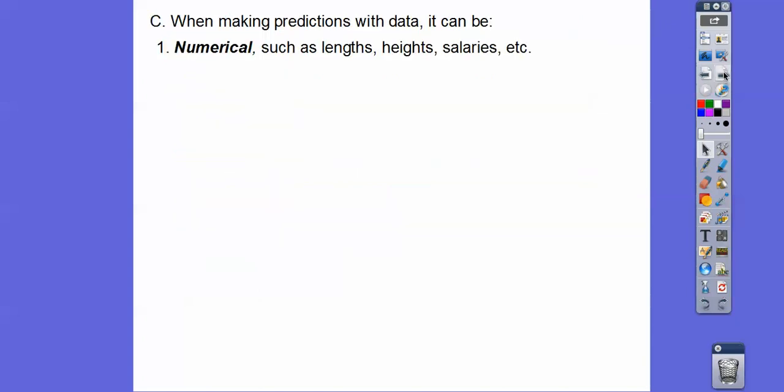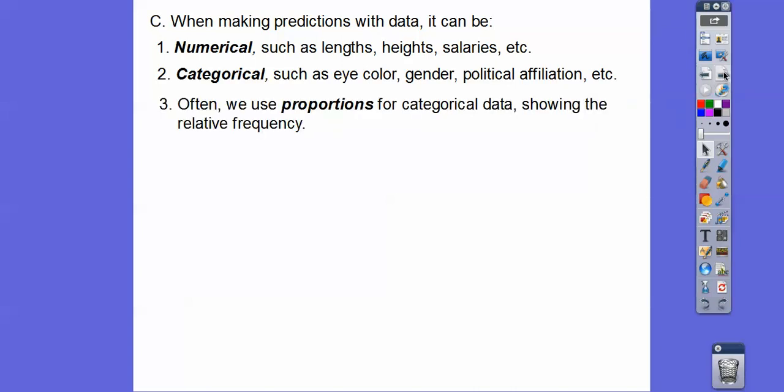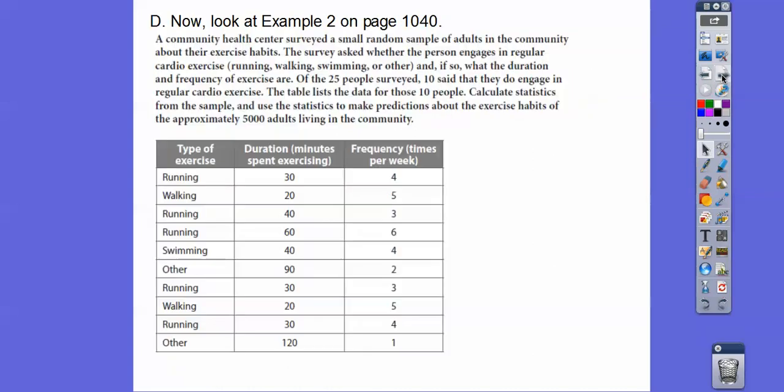All right. So when making predictions with data, it can be a numerical thing such as a length, the heights, the salaries, member mean, median, mode, standard deviation. That's all in the next lesson. Those are numerical data things. So it could be categorical such as eye color, gender, or political affiliation, something like that. So something that's not numbered. Typically, if you can average it, you guys, it's called a numerical one. If you can't average it, then it's a categorical one. And often we use proportions for categorical data showing the relative frequency. So a proportion is, you know, how many of them are red out of the total or something like that.